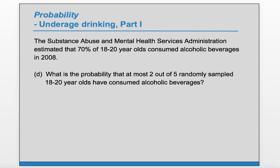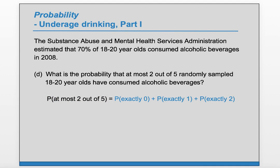Part D: What is the probability that at most 2 out of 5 sampled 18-20 year olds have consumed alcoholic beverages? This is more complicated because it's not asking exactly 2 out of 5 — it's asking at most 2. So we ask: how many can say yes to have at most 2 out of 5 say yes? We could have 0, or 1, or 2. Those 3 cases satisfy 'at most 2,' so we need exactly 0 plus exactly 1 plus exactly 2. We'll be using the binomial formula 3 distinct times and adding up those probabilities.